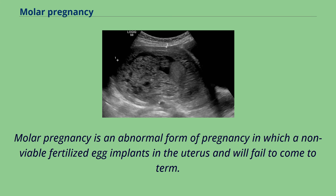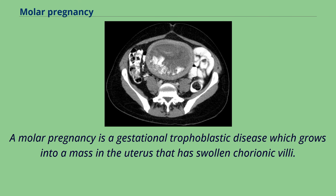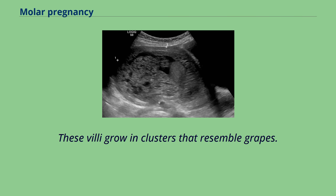Molar pregnancy is an abnormal form of pregnancy in which a non-viable fertilized egg implants in the uterus and will fail to come to term. A molar pregnancy is a gestational trophoblastic disease which grows into a mass in the uterus that has swollen chorionic villi. These villi grow in clusters that resemble grapes.